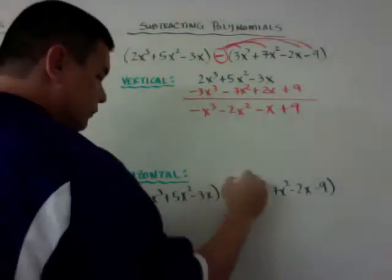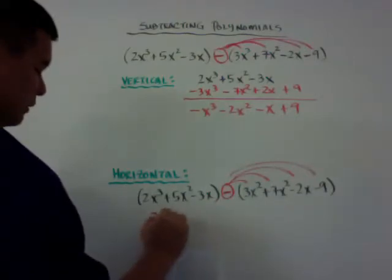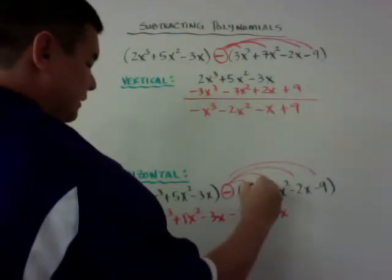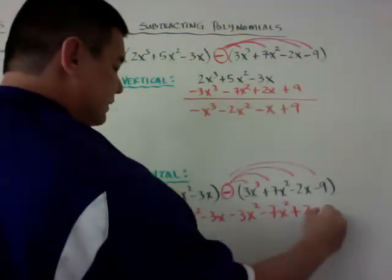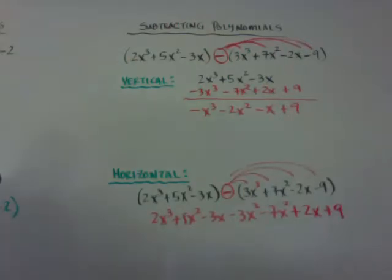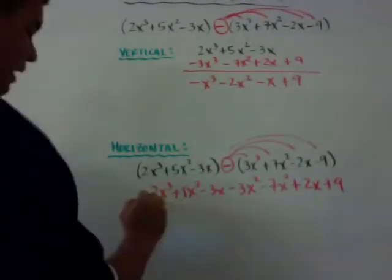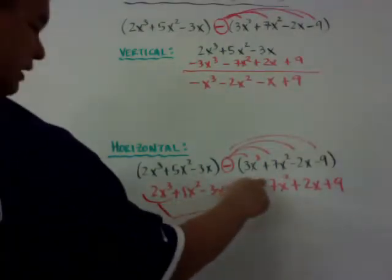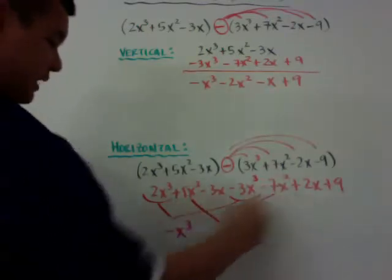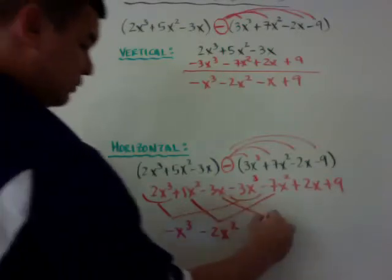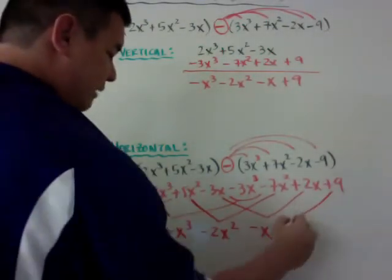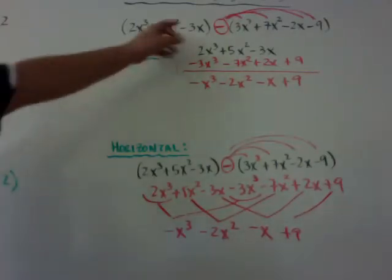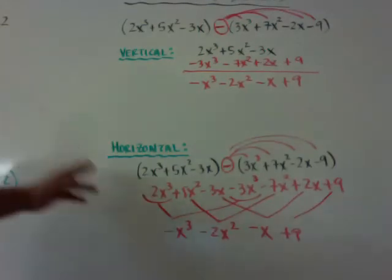If you're going to do it horizontally, you get 2x³ plus 5x² minus 3x, minus 3x³ minus 7x² plus 2x plus 9. Now combine like terms: negative x³, then minus 2x², then minus x, and then just drop down the 9 — plus 9. You get the same answer either way. The major thing is: make sure you distribute your negative when subtracting.